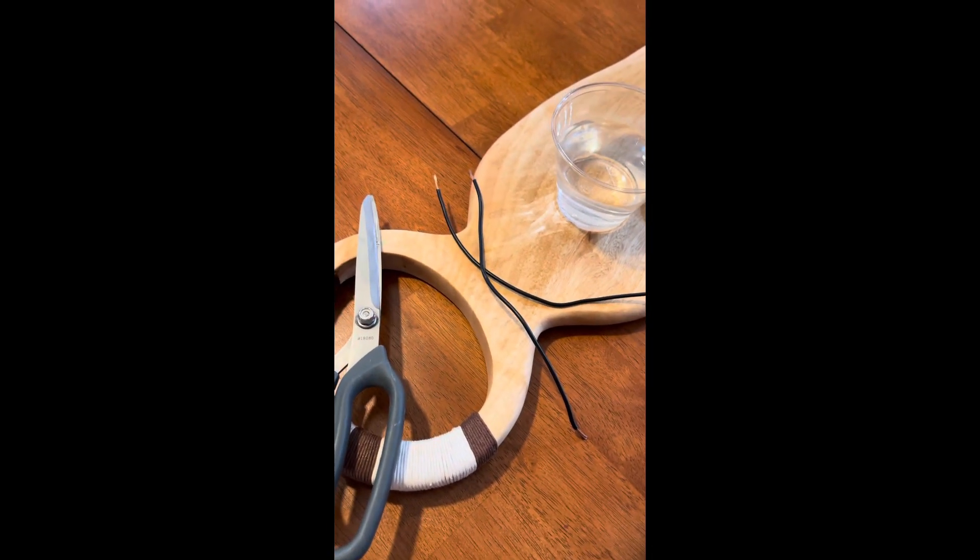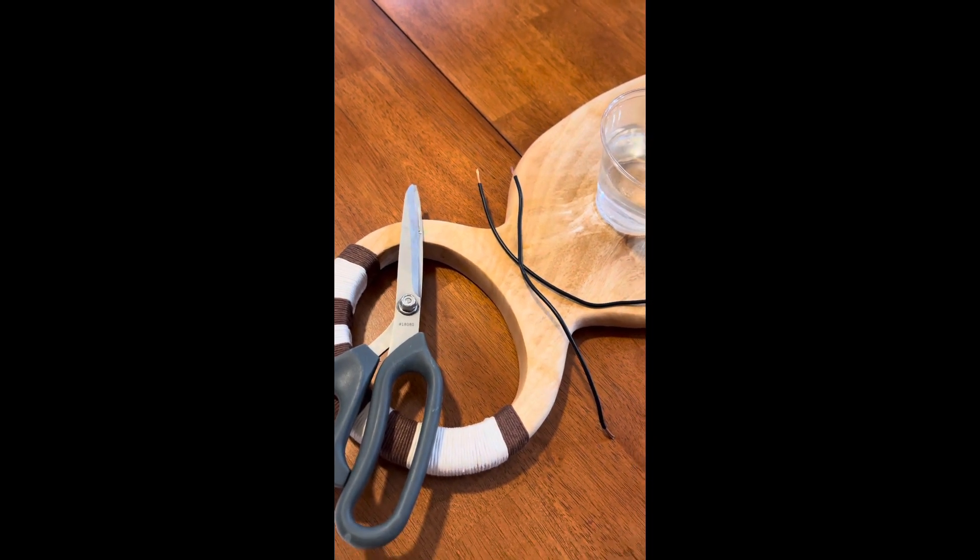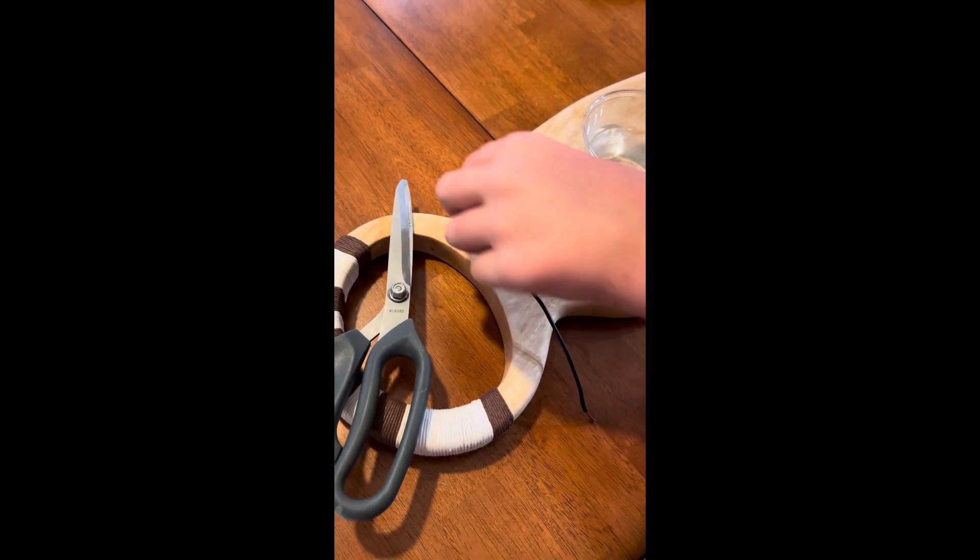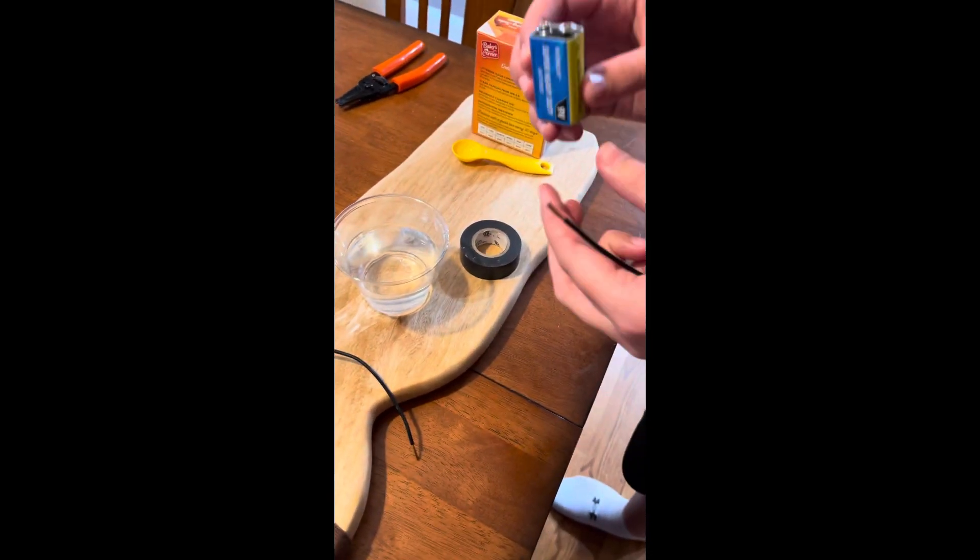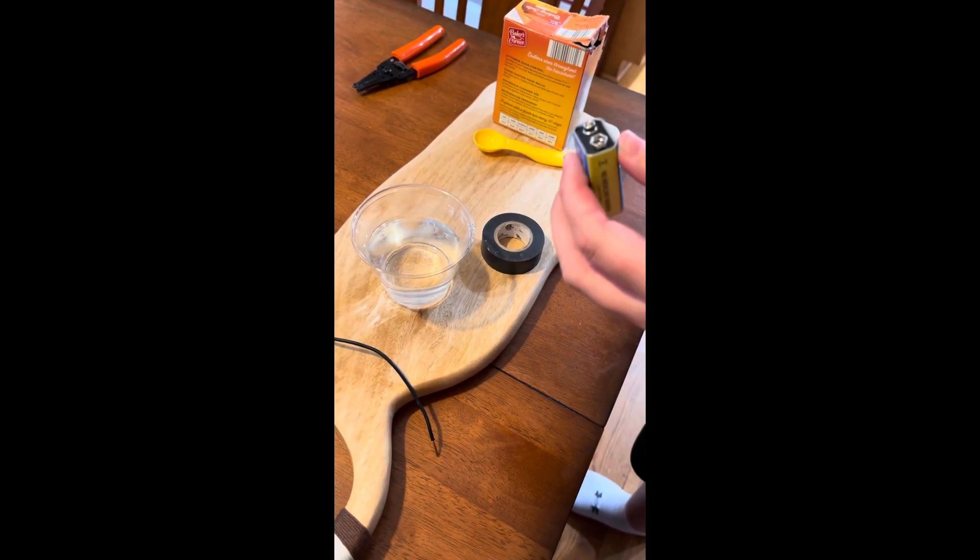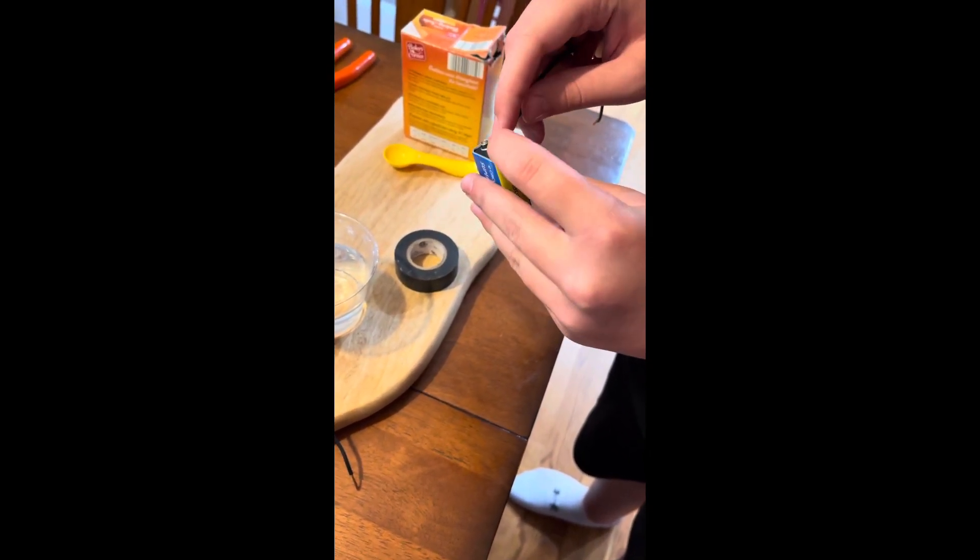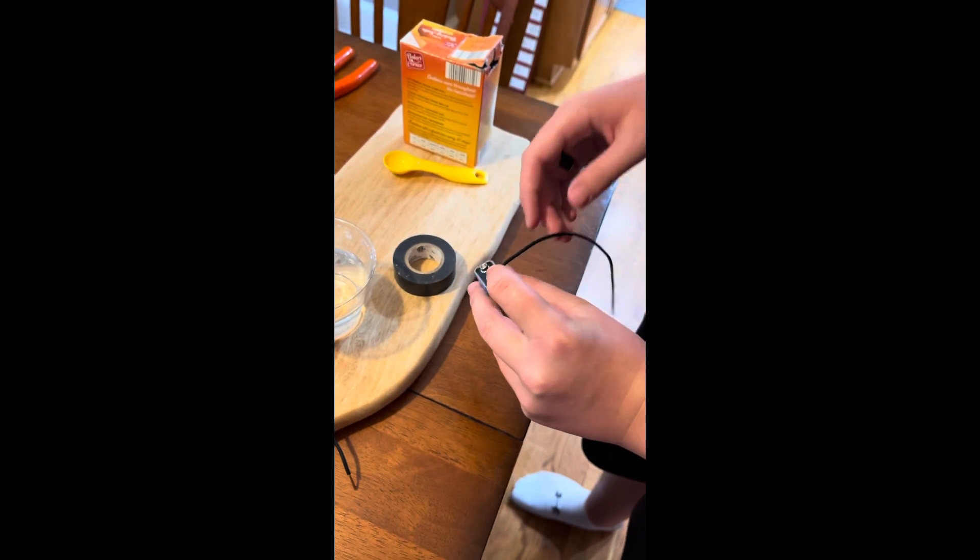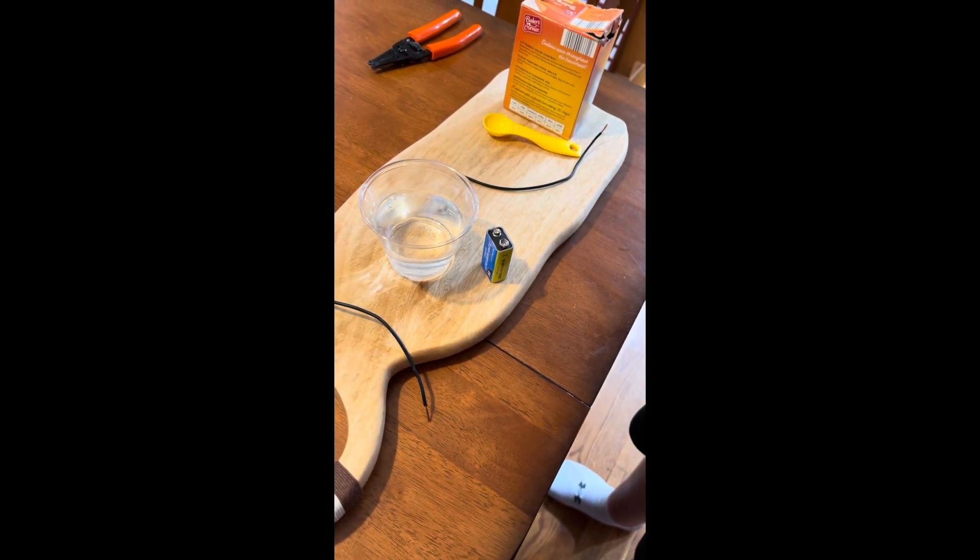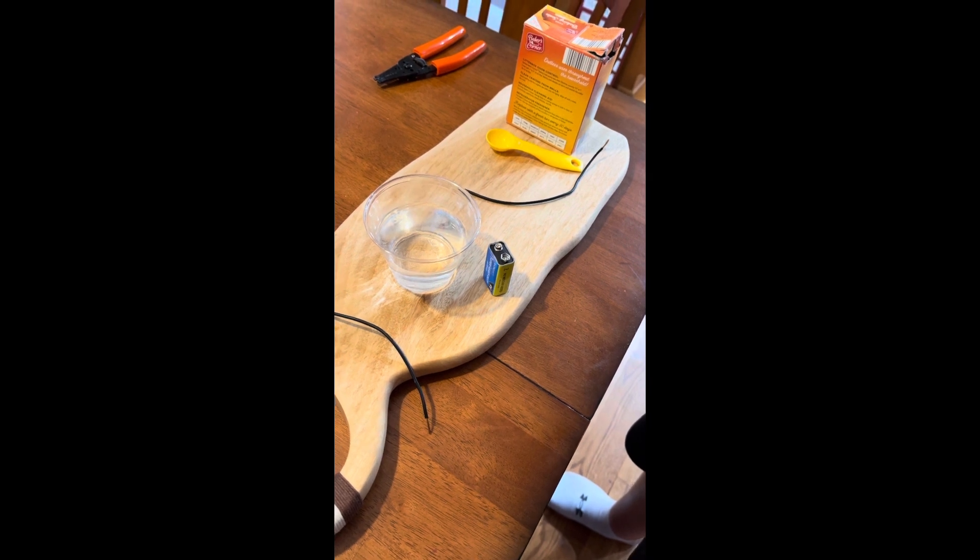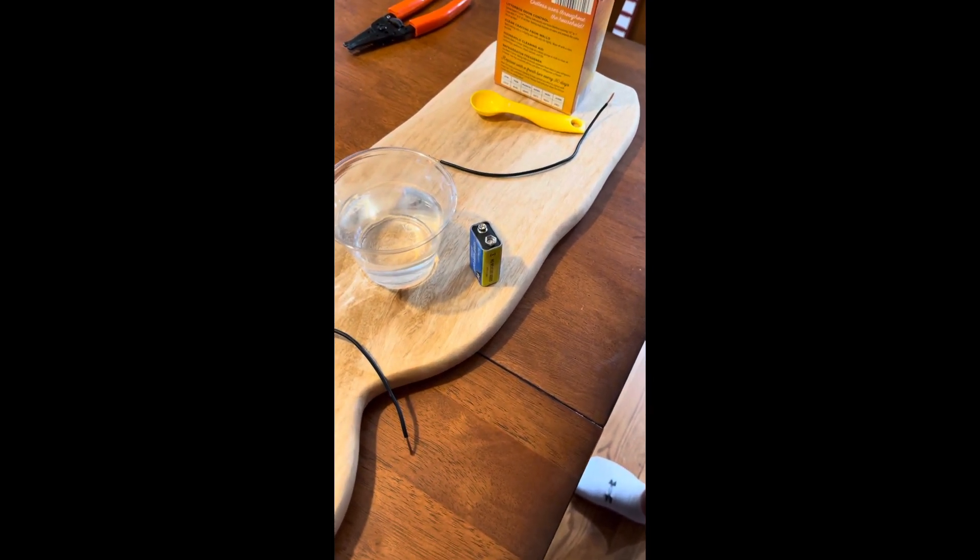Once you've stripped the insulation off both ends of each wire, connect the end of one wire to one of the two terminals on the battery. Do this by laying the wire over the terminal and then pressing it down. Secure it to the terminal with a piece of tape. It does not need to look pretty, but the bare wire needs to be solidly touching one terminal and not in contact with the other. We're going to do this and we'll be right back. So we have the first wire done.